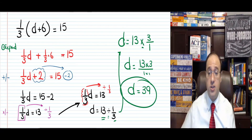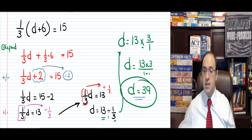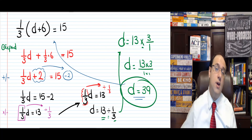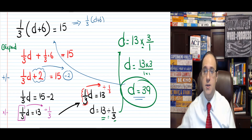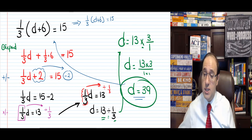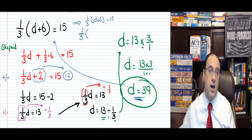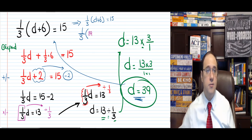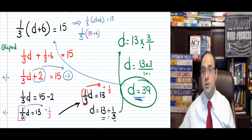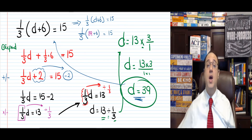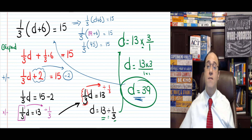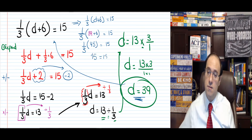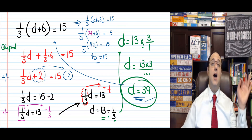Now always check to make sure you got the right answer. So let's check: d equals 39. I take it and put it into the original equation: 1 over 3 times d plus 6 equals 15. If d equals 39, it becomes 1 over 3 times 39, and 39 plus 6 is 45. Then 1 over 3 times 45 — they say equals 15. Let's check: 1 third of 45 is 45 divided by 3, which is 15. So 15 equals 15. d equals 39. I was right.